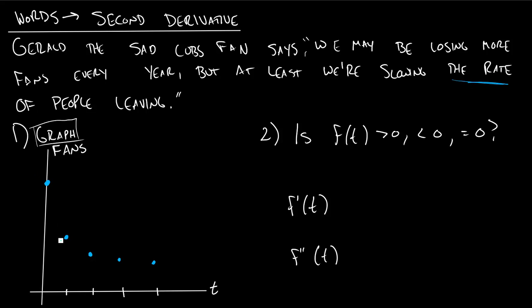And so if we think about this graph here, f prime is actually still negative the whole time. The graph is always decreasing and that's what he says. We're losing fans every year. But f double prime is actually, if you look at the concavity of this graph, it's positive. And so to do these types of word problems, it really helps to try to think about f and maybe even draw out an example of what it could be.